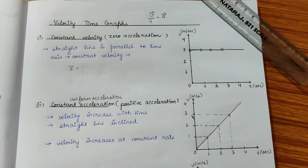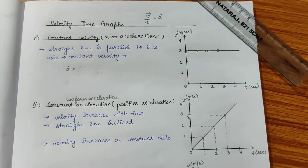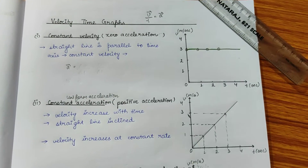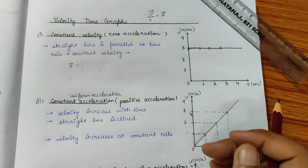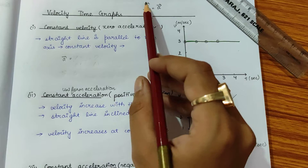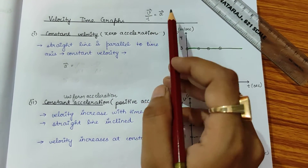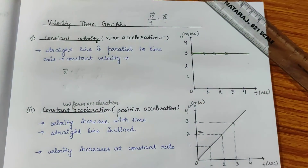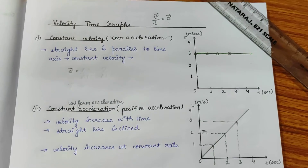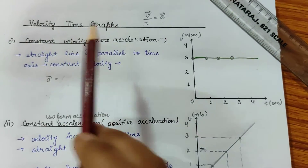After displacement-time graphs, we are going to study velocity-time graphs. As the name suggests, the relation between velocity and time — v upon t — is equal to acceleration. So we are going to find out acceleration in this case.